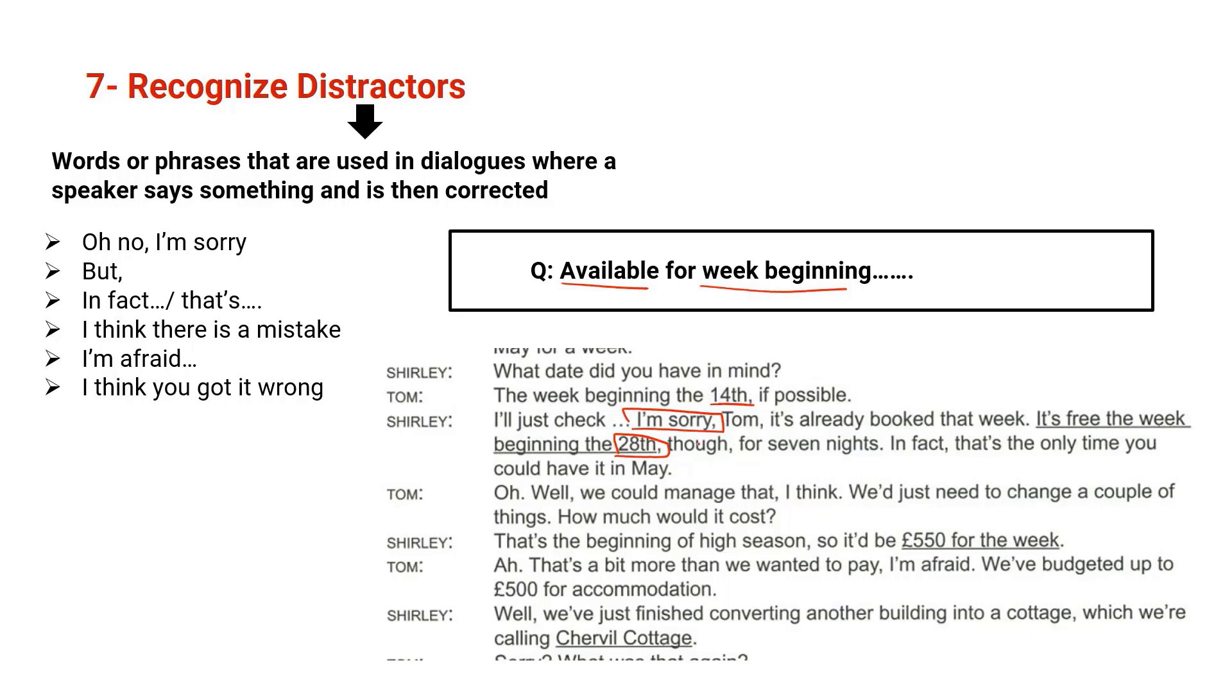And after that this number is corrected to 20th. So you have to read it carefully. Available for week beginning. So here the answer: I'll just check, I'm sorry Tom, it's already booked that week, so on 14th it's booked. It's free the week beginning the 20th. Free is a synonym for available, so here you choose 20th.